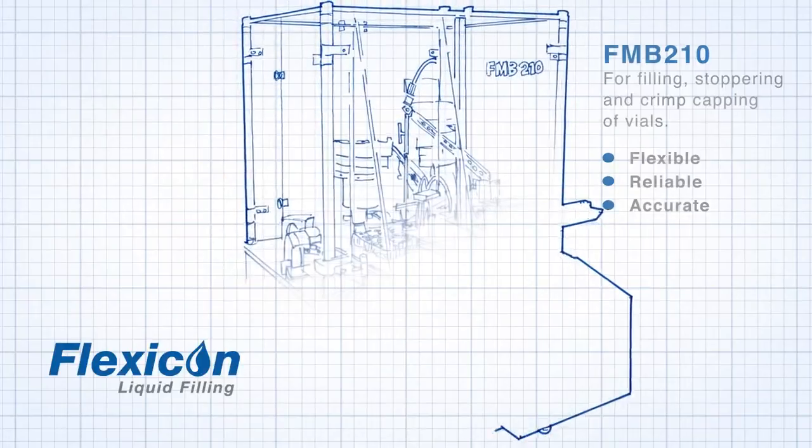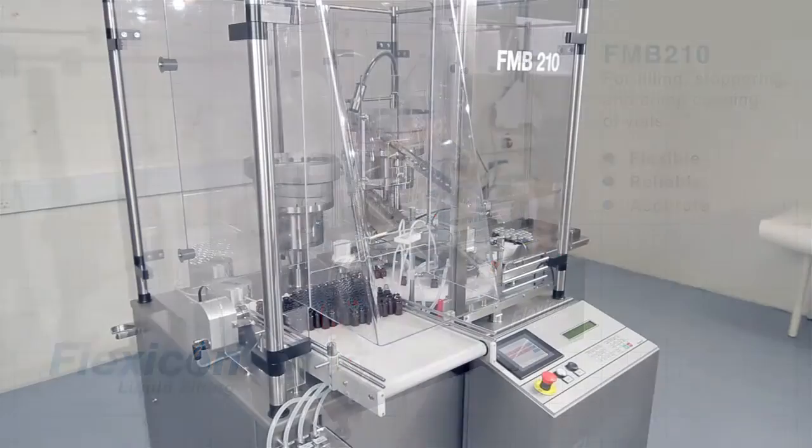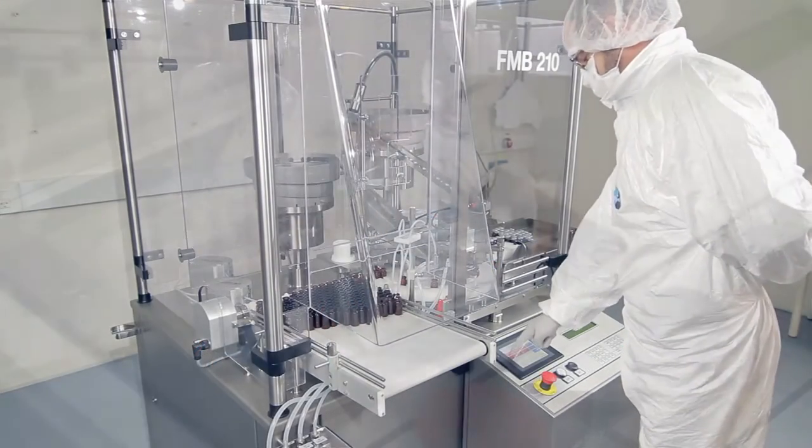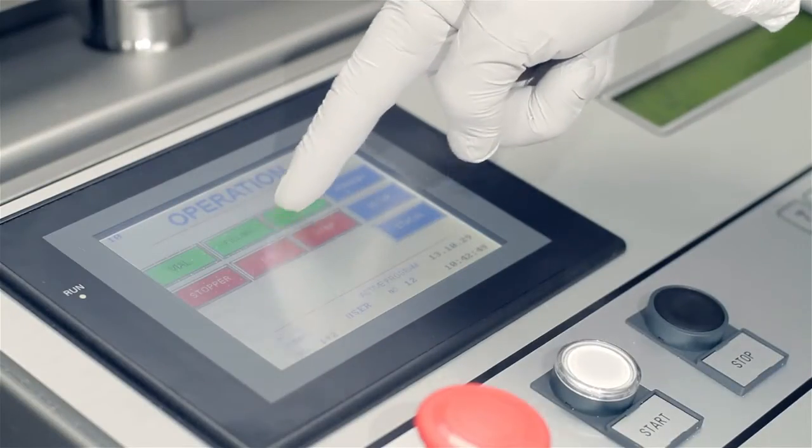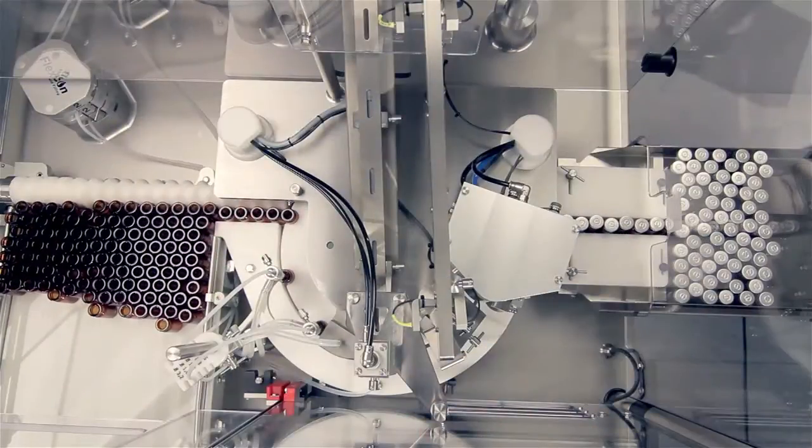Flexicon's FMB210 is a family of fully automatic filling and capping machines. One version of the FMB210 is ideal for filling, stoppering and crimp capping of vials in the pharmaceutical, biotech and diagnostic industries.